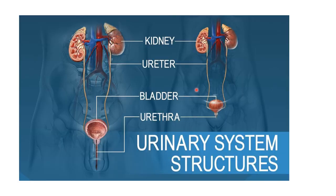Now let's study the human excretory system. It consists of two kidneys, a ureter on either side arising from each kidney, one urinary bladder, and a urethra. This is the male arrangement and this is the female one. Now let's first see about the kidney.